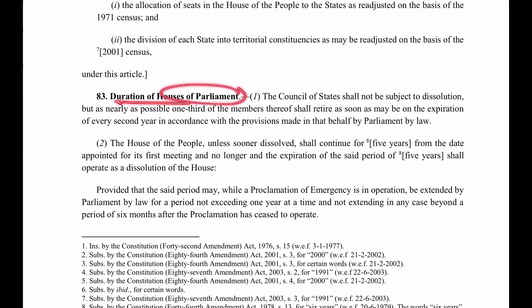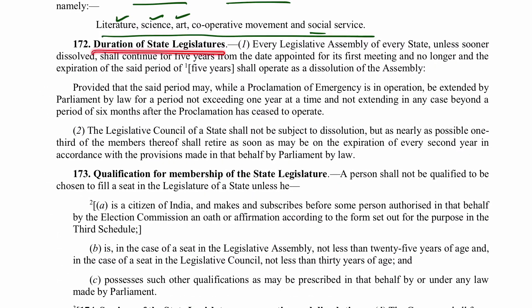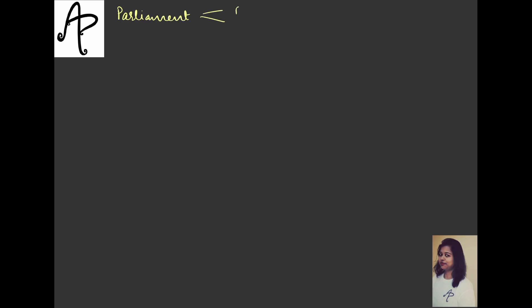Duration of Houses of Parliament is covered under Article 83, and for the state, duration of state legislatures is under Article 172. Firstly, if you talk about the parliament, the houses are Rajya Sabha and Lok Sabha, and their duration we have to look at - it is given in Article 83.